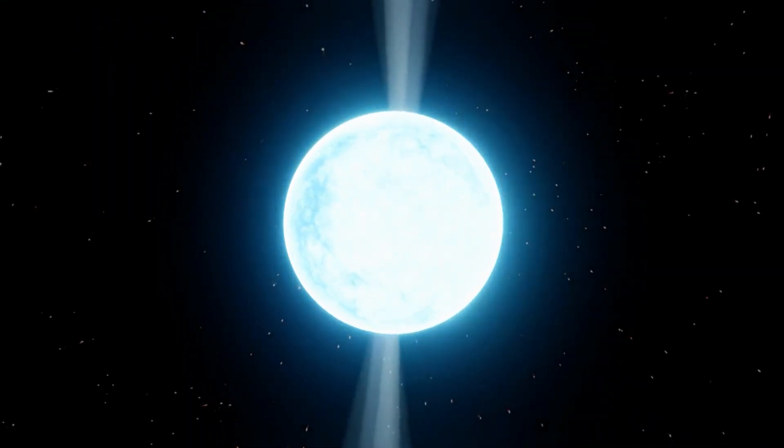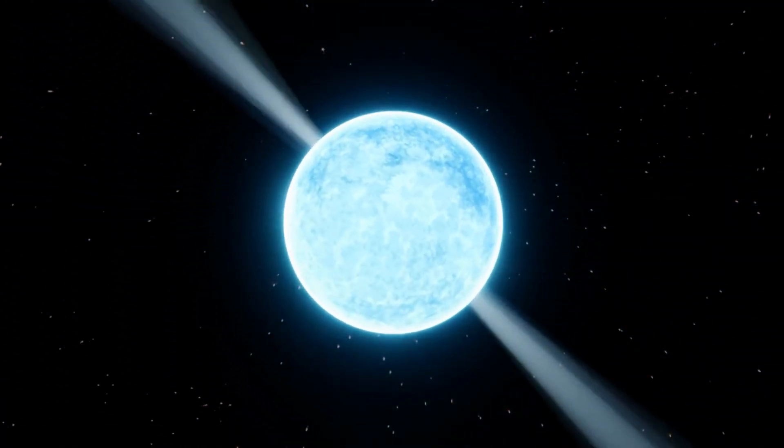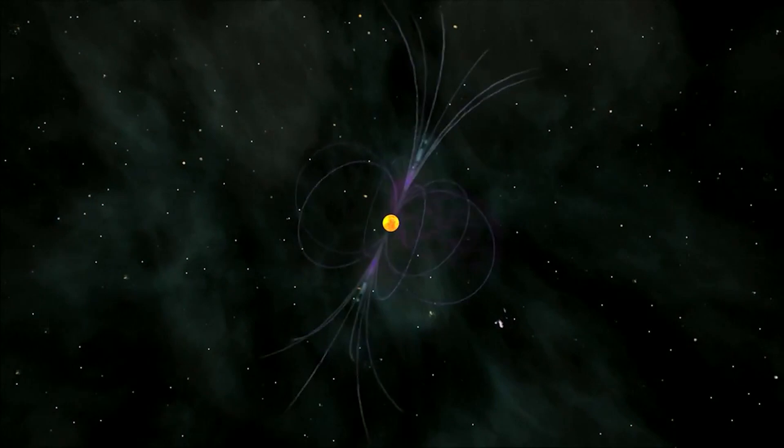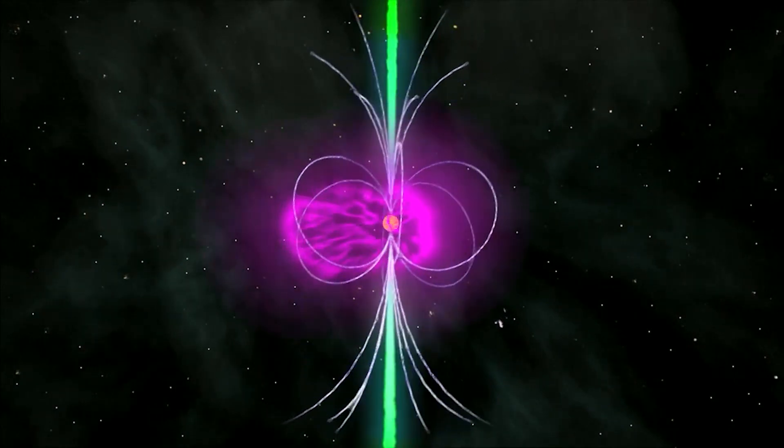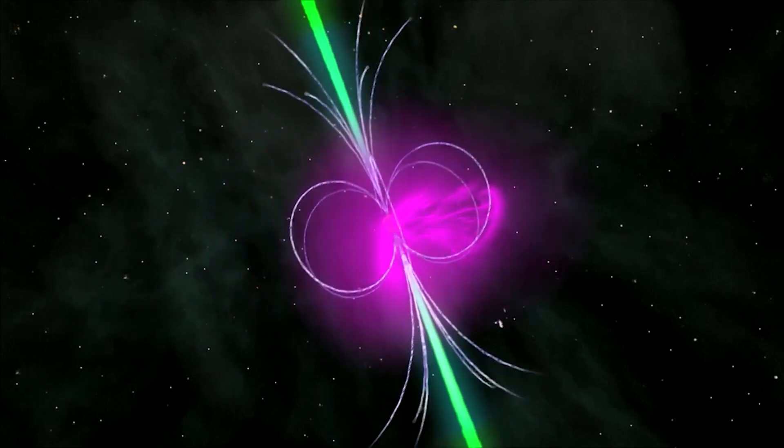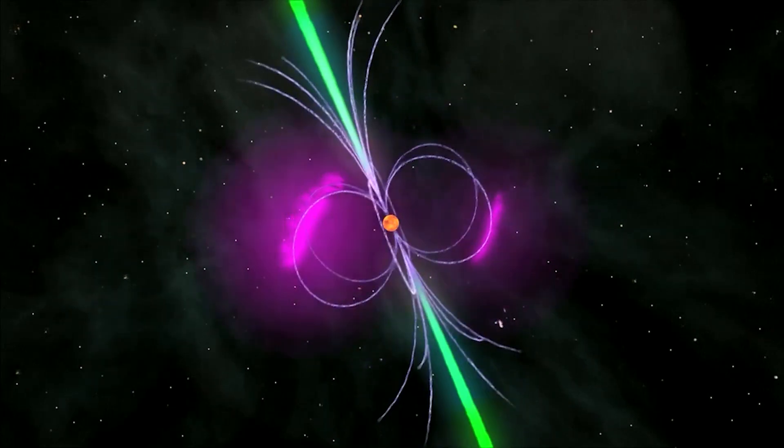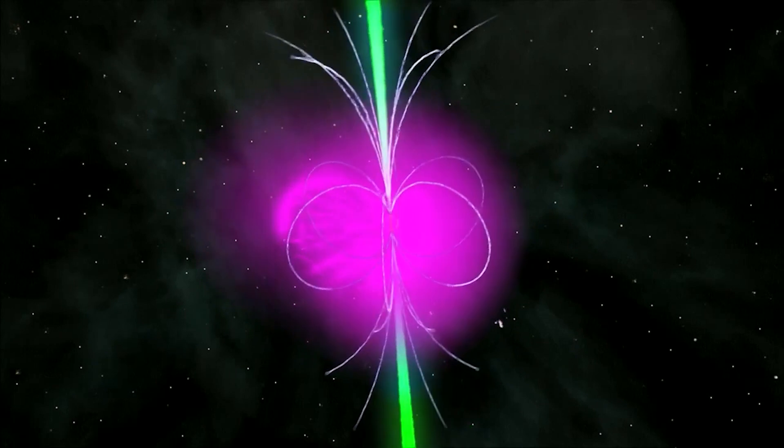A notable characteristic of NGC 6397b is the faintness of its radio signal and extended radioquiet periods. The researchers hypothesized that NGC 6397b is part of a subclass of extremely faint and heavily obscured binary pulsars.